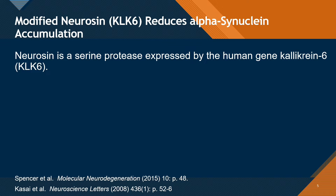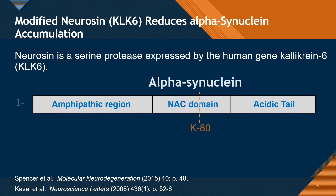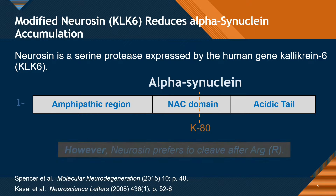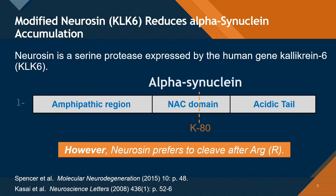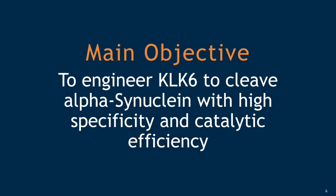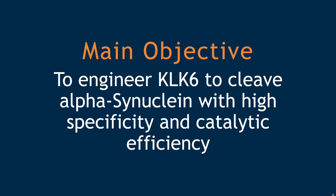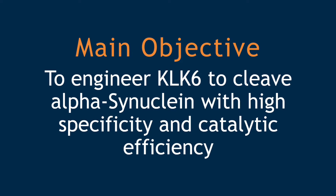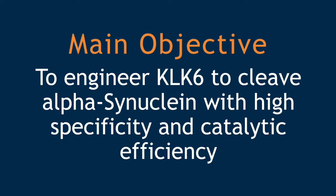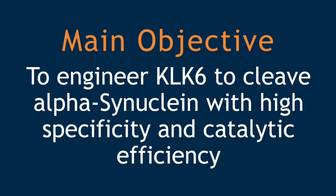Proteases are enzymes that cleave proteins. Neuricin is a protease expressed by the human Calocrin-6 gene in the central nervous system. Calocrin-6 has been shown to cleave alpha-synuclein after lysine, leading to its degradation. However, 99% of the time it prefers to cleave substrates after arginine. The main goal of this project is to engineer Calocrin-6 to cleave alpha-synuclein with high specificity and catalytic efficiency.